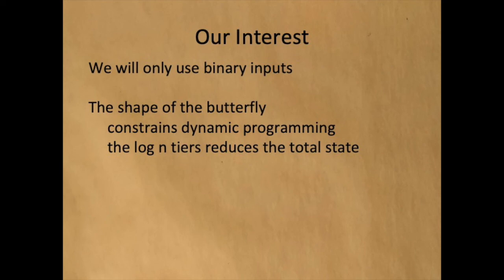Our interest. We will use the fast Hadamard transform, because we are interested in the computation, though we will only use it with binary inputs. We are also interested in the shape of the butterfly. The shape constrains the dynamic programming, in part because log n tiers reduces the total state.